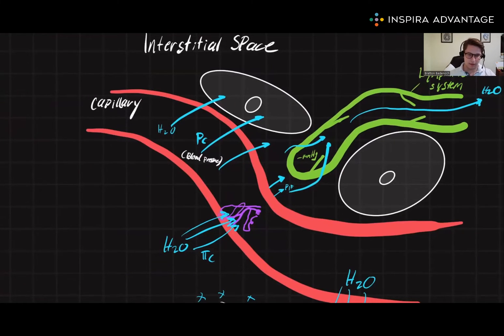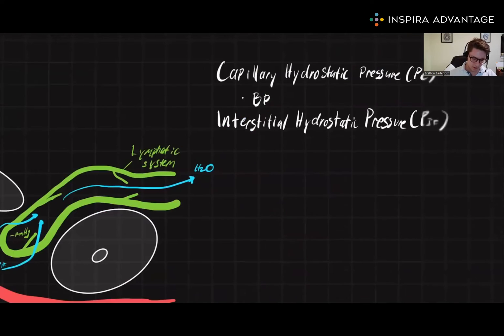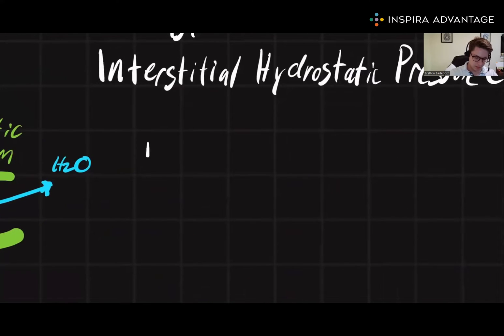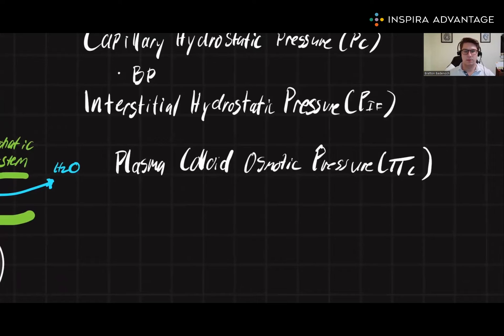Now, the last two processes have to deal with proteins and osmosis. The first one is called the plasma colloid oncotic pressure or pi C. This is caused by the presence of large proteins suspended in blood plasma. The large proteins cause water to move into the capillaries from the interstitial space, therefore increasing the blood volume.